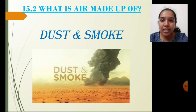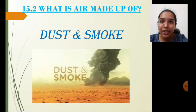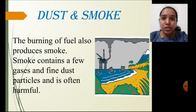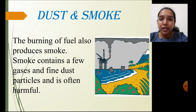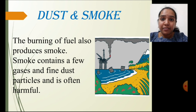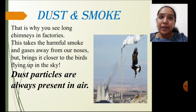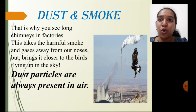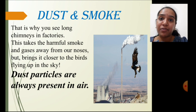The next component present in air is dust and smoke. We advanced human beings are continuously dependent on burning fuels, using automobiles, and releasing smoke from factories, which releases large amounts of dust, smoke, and harmful gases into the atmosphere. Even dust particles are always present in air, and the harmful gases and smoke released from factory chimneys harm birds flying in the sky.